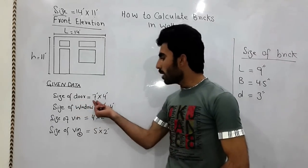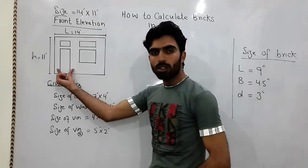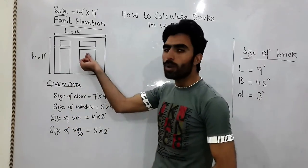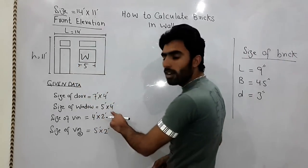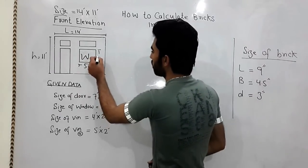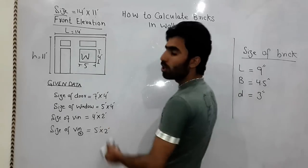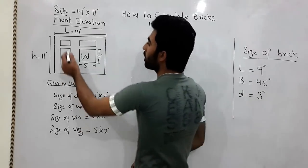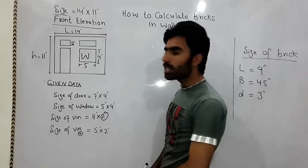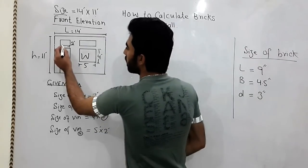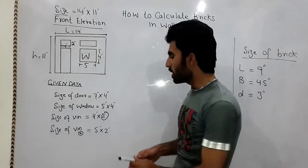The given data: size of the door is 7 feet by 4 feet, where 7 feet is the height and 4 feet is the breadth of the door. The size of the window is 5 feet in length and 4 feet in height. The size of the ventilator is 2 feet in height and 4 feet in breadth.